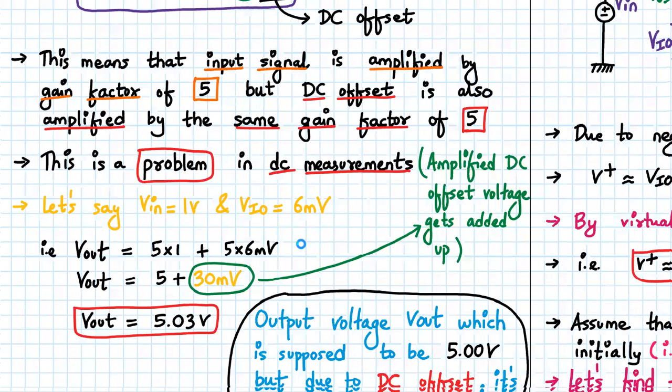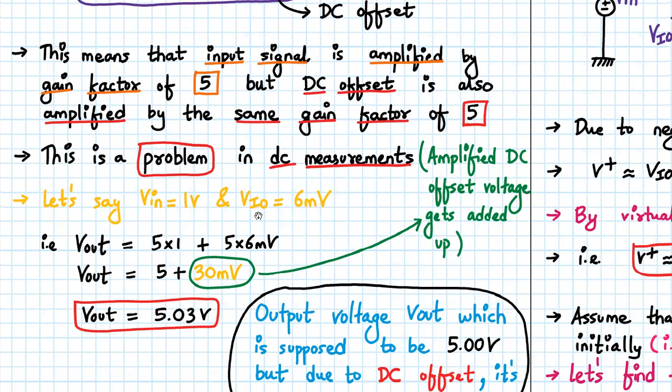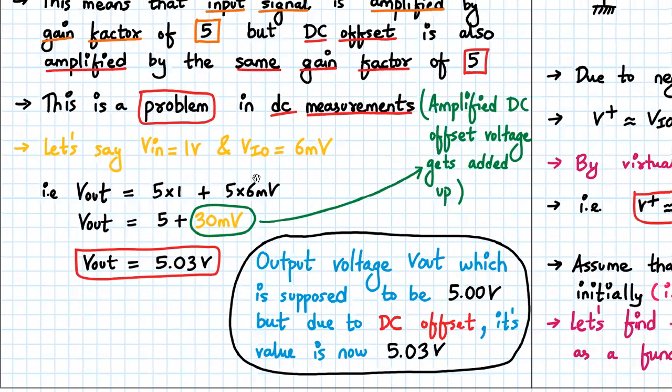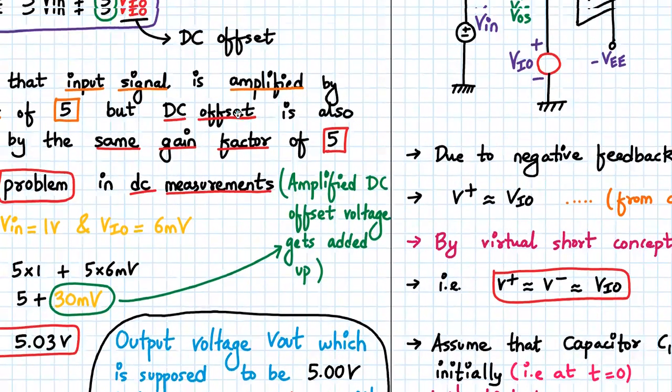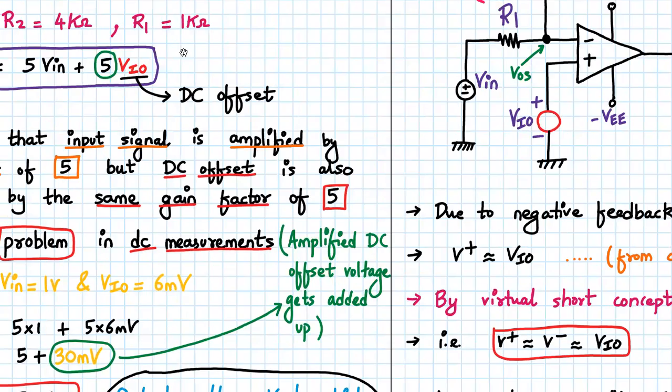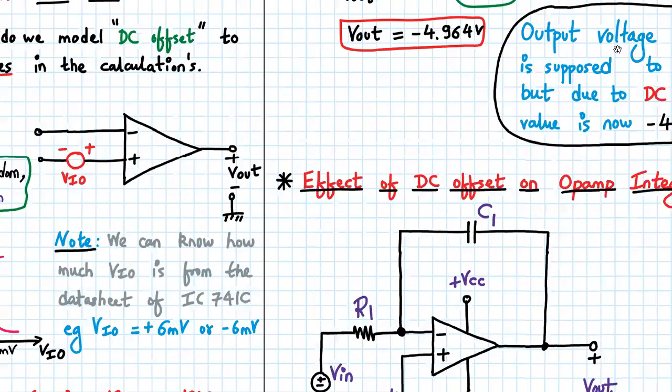Let's say Vin is 1 volt and VIO is 6 millivolts, so Vout = 5(1) + 5(6mV) = 5 + 0.03 = 5.03 volts. The conclusion is that the output voltage Vout, which is supposed to be 5.00 volts, but due to DC offset, its value is now 5.03 volts. That's the effect of DC offset on the non-inverting amplifier.